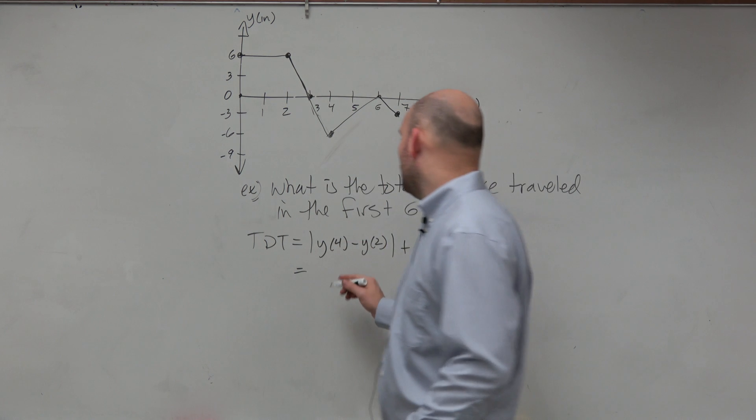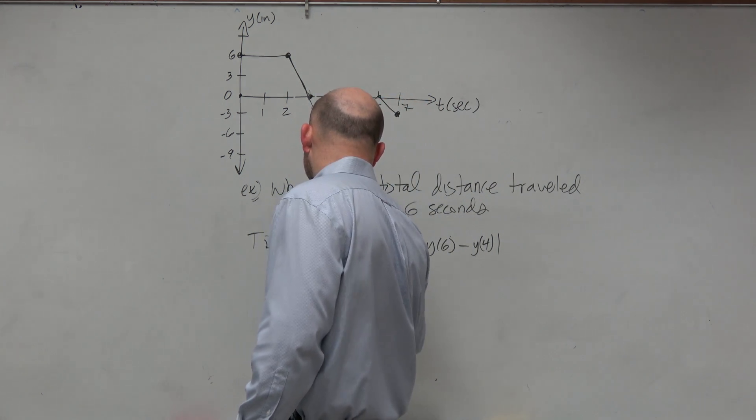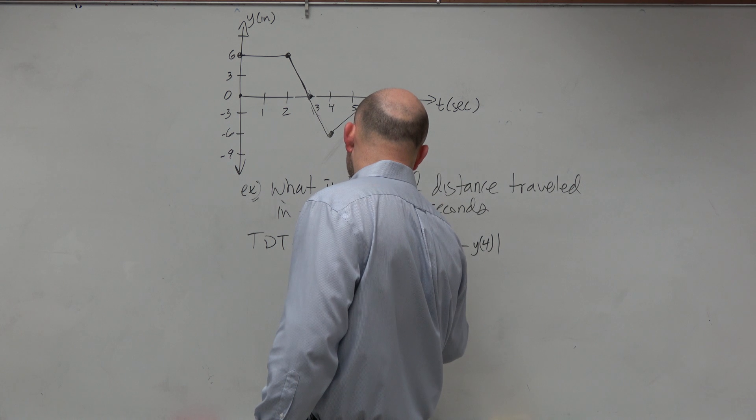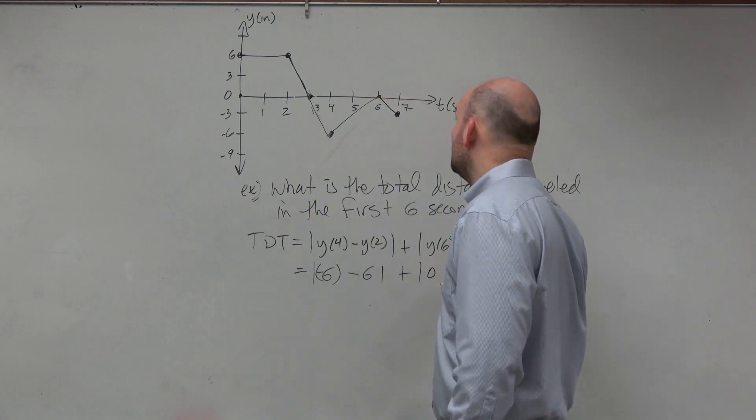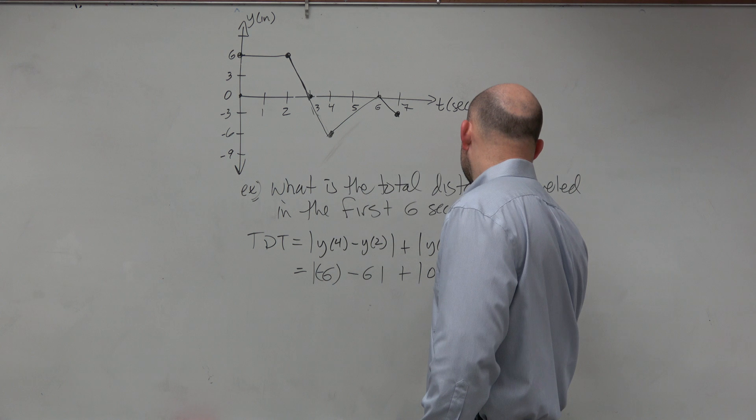So y sub 4 is absolute value of negative 6 minus positive 6, plus y sub 6 which is 0, minus y sub 4 which is negative 6.